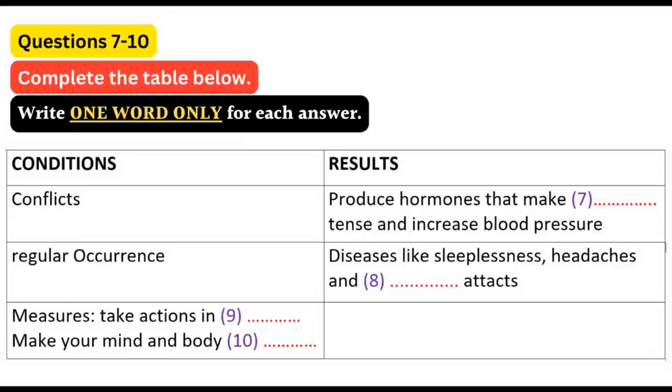You know, they start when conflicts at work induce stress. Your body reacts by flooding the bloodstream with hormones that tense up your muscles and increase your blood pressure. This is meant to save you in a fight-or-flight situation, but leads to a host of illnesses, ranging from insomnia and headaches to heart attacks, when it occurs regularly over an extended period of time.